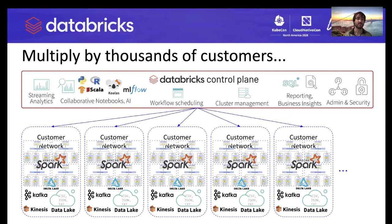Databricks consists of both a control plane and a data plane. The control plane is where customers log into Databricks and it allows customers to manage users, manage Spark clusters, create notebooks, set up jobs to run periodically, and so on. The data plane is where the Spark clusters run. You may have noticed there's one control plane and many data planes. This is because Databricks uses what's known as the BYOVPC model — the control plane runs in the Databricks cloud account, but the data plane runs in the customer's cloud account.